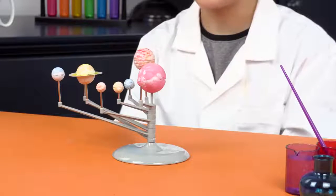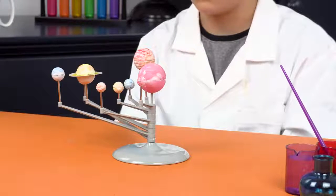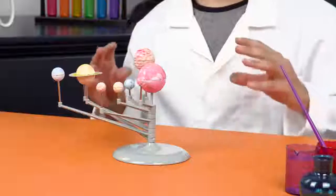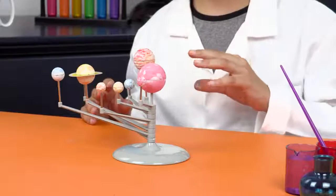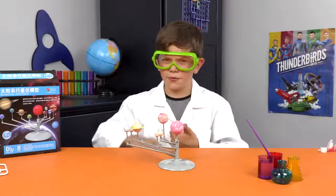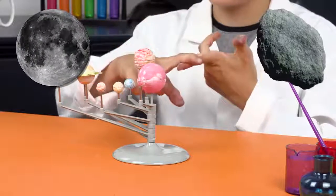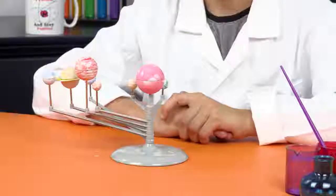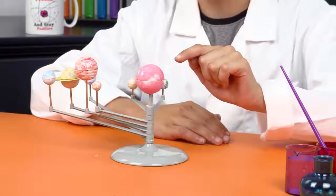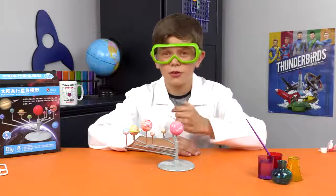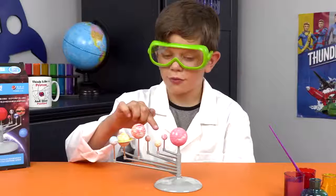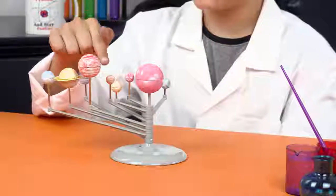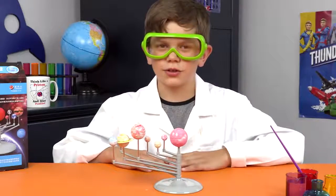My solar system isn't quite as old as the real one, which is 4.6 billion years old. So, here I've just got the planets, but the solar system contains so much more. To name a few, moons, asteroids, the asteroid belt and comets. So, the sun is the hottest point in the solar system, but which do you think is the hottest planet? Mercury? The one right next to the sun? Surprisingly not. It's actually Venus.